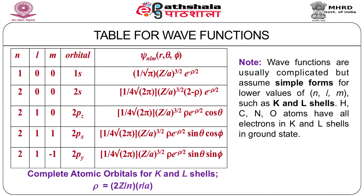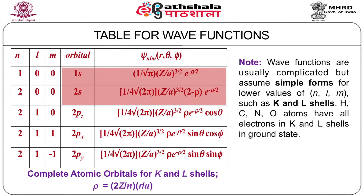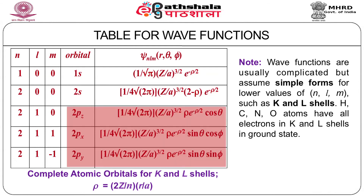For K shell, n = 1, so L can only be 0, and M is also 0 — this is the 1s orbital. For the L shell, n = 2, so L can be 0 or 1, giving four possibilities. When L = 1, M can be 0, 1, and −1. So the energy level E₂ is four-fold degenerate. The 1s and 2s orbitals have no angular dependence, while the P orbitals depend on angles θ and φ as well.